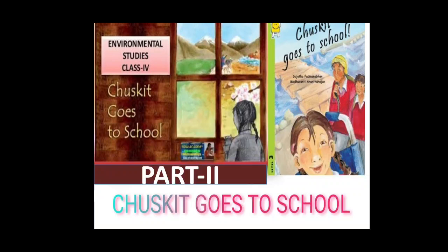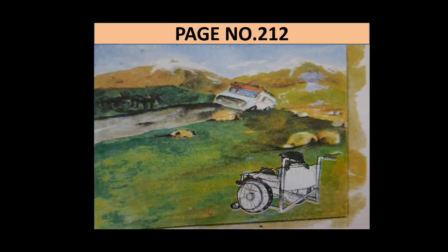All day, Chuskit used to sit near the window and draw pictures. Her mother, Amalie, said that Chuskit made the best drawings. This made Chuskit very happy. And while sitting near the window, Chuskit kept on watching the children who were going to school. But unfortunately, she was not able to go to school due to her disability. At first, Chuskit did not know that she was different from other children. But slowly, she found that she could not do the things that other children could — it was because of her legs. Since birth, Chuskit could not use her legs.